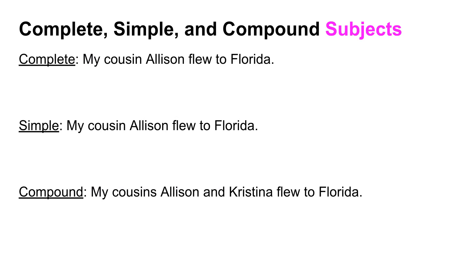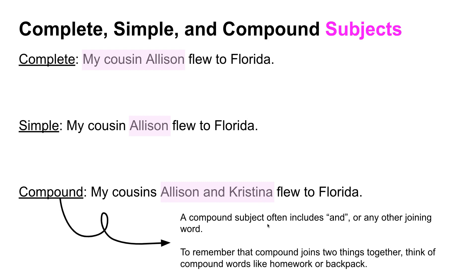Here's another example: 'My cousin Allison flew to Florida.' Pause and try to identify the complete, simple, and compound subjects. The complete subject is 'my cousin Allison.' For the simple subject, Allison is the smallest identifier — it doesn't matter that she's my cousin. For the compound subject, it's 'my cousin Allison and Christina,' or simply 'Allison and Christina,' including the joining word 'and.' Compound subjects can also use joining words like 'or,' 'nor,' or 'but.'